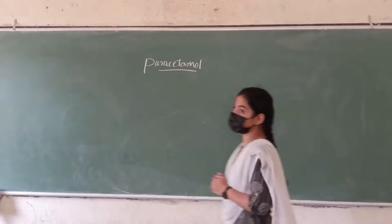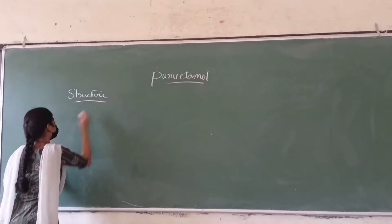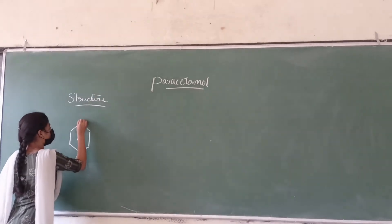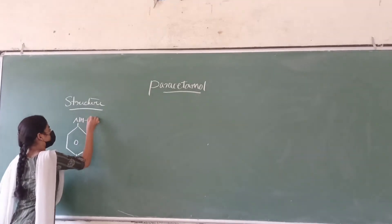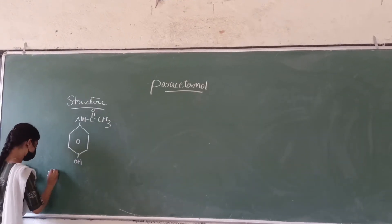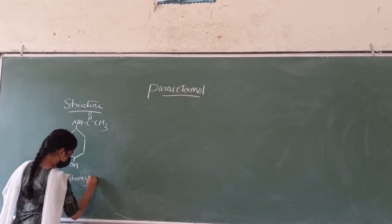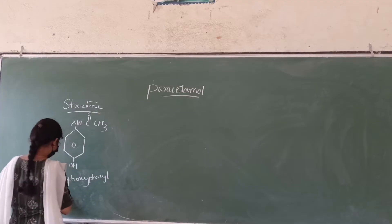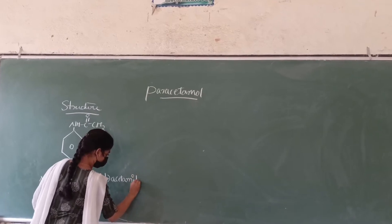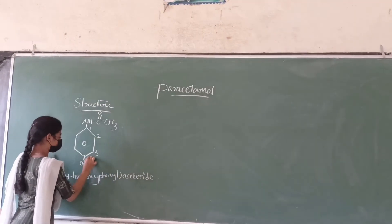Before going to the synthesis, let us see the structures. The structure of the drug is like this. This is the structure of paracetamol. It is also known as N-(4-hydroxyphenyl)acetamide.